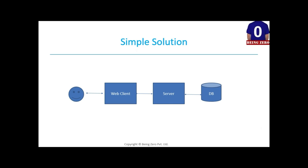So for the simple solution: we have a web client - it can be a React UI, Angular UI, or a normal HTML page. Then there's a server - we're not worried about whether it's Java, Python, or something else - it just exposes an API that the web client can interact with. Then you have a database, because you need to store messages somewhere. For a college project you might use an in-memory database, but for an enterprise application you need a real database.